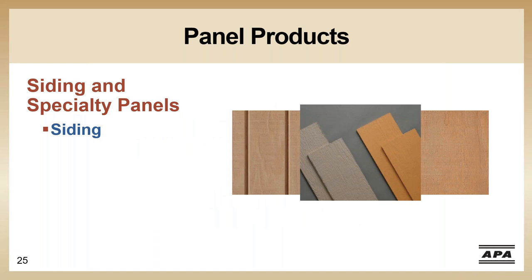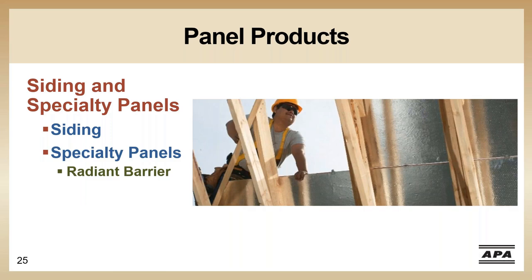Moving on to siding: APA siding is available with a wide variety of patterns and finishes. All of the adhesives used in the siding are moisture-resistant with an exterior bond classification, and the panels are designed to be impact-resistant for windblown debris. Here in the Carolinas, one of the most popular specialty products I see used frequently is radiant barrier sheathing. Radiant barrier sheathing is basically a wood structural panel with a reflective coating on one side, used as roof sheathing in a lot of residential structures to improve energy performance.